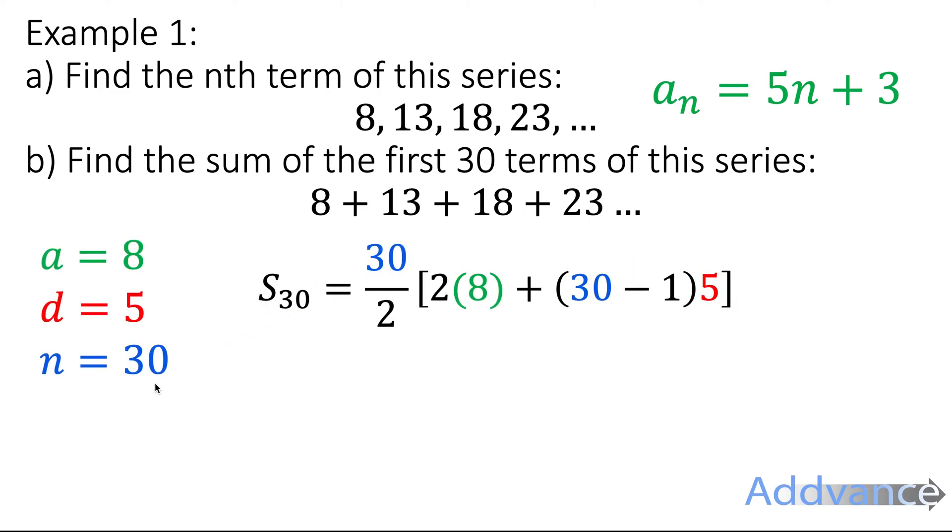So we substitute those numbers into the formula like this. And we can simplify a little bit. 30 divided by 2 is 15. 2 times 8 is 16. 30 minus 1 is 29. And we can type that into our calculator. We get 2,415. That is the final answer.